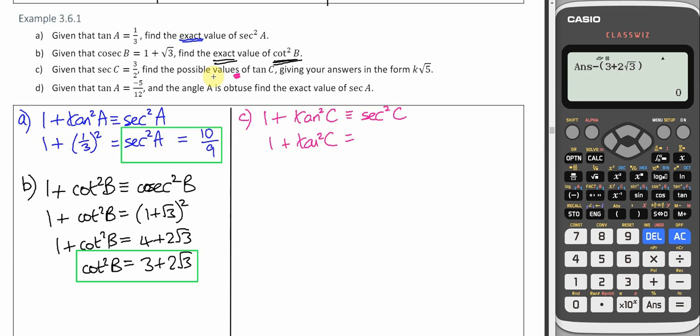So sec is 3 over 2. Square that and you've got 9 over 4. Take 1 away from both sides. So tan squared C is 5 quarters.